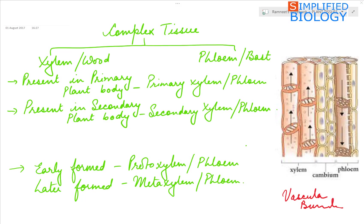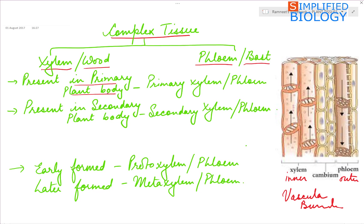Next, the Complex Tissues. Complex tissues are of two types: Xylem and Phloem. Xylem and Phloem together form the vascular tissue. Xylem is present towards the inner side, while Phloem is present towards the outer side. Xylem is also referred to as wood, while Phloem is referred to as bast. The xylem or phloem present in the primary plant body is referred to as primary xylem and primary phloem, formed from the procambium.